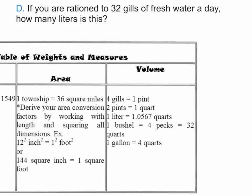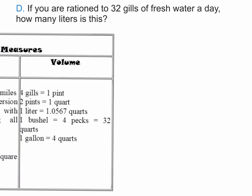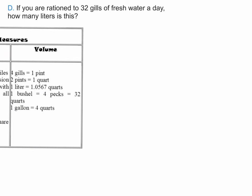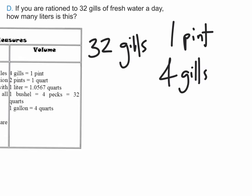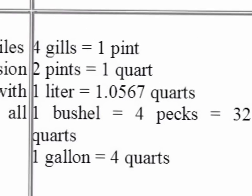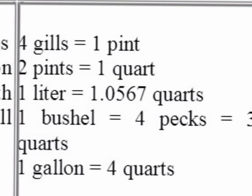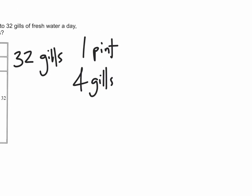So let's shift this over right here. And let's start. We're going to start with 32 gills. And 32 gills, what kind of relationship do gills have with pints? I can see that 4 gills is equivalent to 1 pint. Great. And when we sort of shift over a little bit, I can see that 2 pints, right, is equivalent to 1 quart. 2 pints are equivalent to 1 quart. Great.